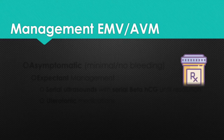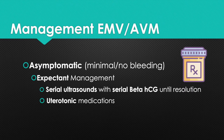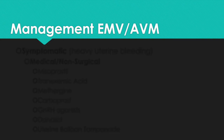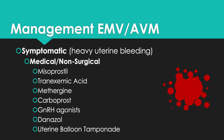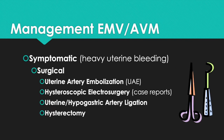Management of EMV-AVM is symptom dependent. Asymptomatic patients can have expectant management with serial ultrasounds and serial beta-HCGs until resolution, as well as uterotonic medications. Symptomatic patients can be managed in a medical or non-surgical manner using misoprostol, tranexamic acid, methergine, carboprost, GnRH agonist, danazole, and uterine balloon tamponade. Symptomatic patients with heavy bleeding may require uterine artery embolization, hysteroscopic electrosurgery, uterine-hypogastric artery ligation, or hysterectomy.